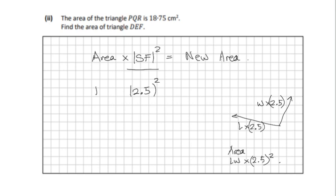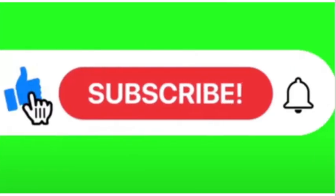So the original area is 18.75. Let's multiply that by 2.5 squared and let's see what we get. 2.5 squared is 6.25, and multiply that by 18.75 and we will get 117.18 which is rounded to 117.19, and we can put in our units as well, centimeters squared. Thank you for joining Maths Plus. We'll see you next time.